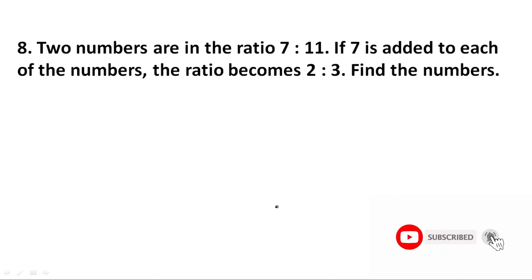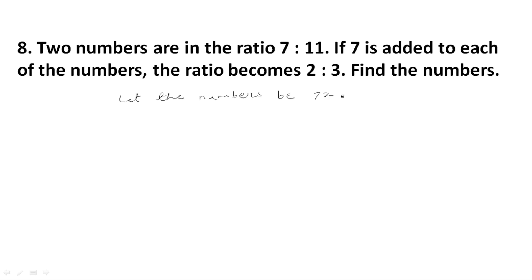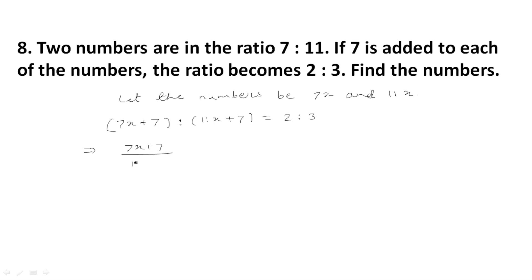Question number 8: Two numbers are in the ratio 7 is to 11. If 7 is added to each of the numbers, the ratio becomes 2 is to 3. Find the numbers. Let the numbers be 7x and 11x. If 7 is added to each, the new numbers become 7x plus 7 and 11x plus 7, and the new ratio is 2 is to 3. This implies 7x plus 7 divided by 11x plus 7 is equal to 2 divided by 3.